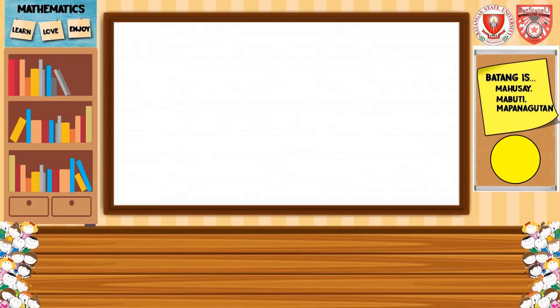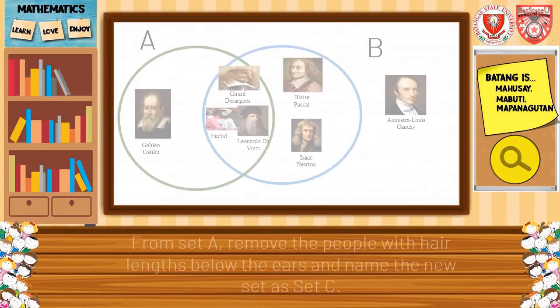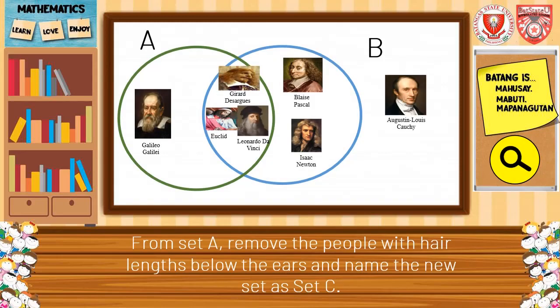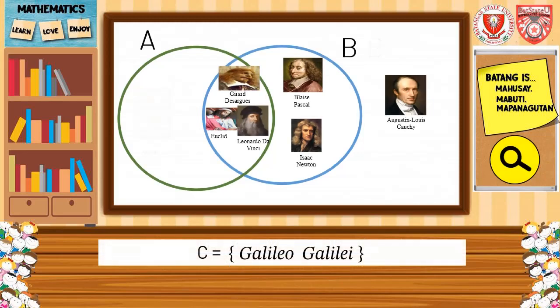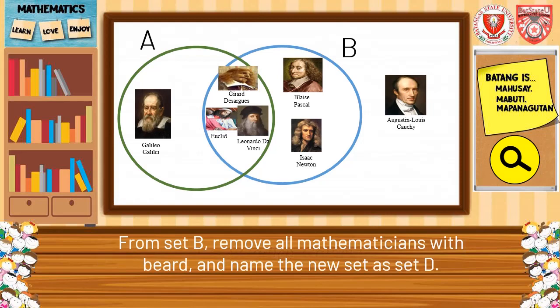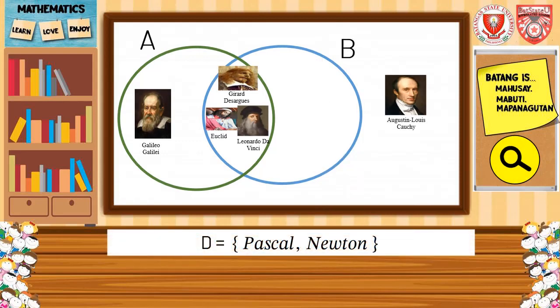We have on the list: Galileo Galilei, Disorgus, Euclid, Leonardo da Vinci, Blaise Pascal, Isaac Newton, and Agustin Luis Couch. We define set A as the set of mathematicians with a beard, while set B contains the mathematicians with hair length below the ears. From set A, remove the people with hair length below the ears and name the new set as set C. The element of C is Galileo Galilei. From set B, remove all mathematicians with a beard and name the new set as set D. Set D contains Pascal and Newton.